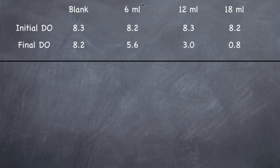So here's the information they've given you. You have your sample blank, and then you have a sample that was 6 mls of sample, 12 mls of sample, and 18 mls of sample. Here was your initial DO, then you incubated it for 5 days, and you got a final DO.